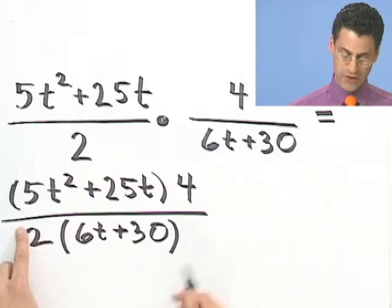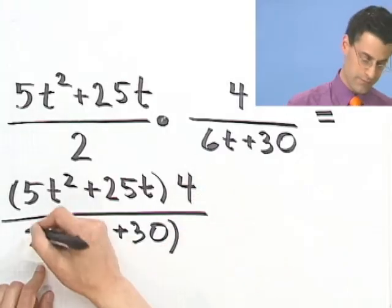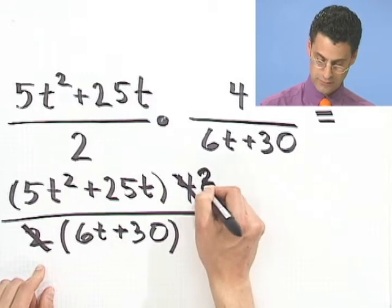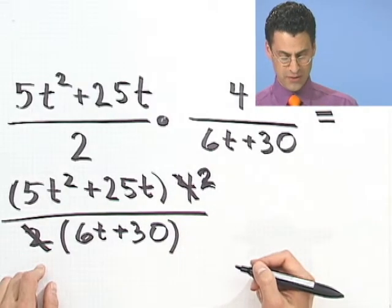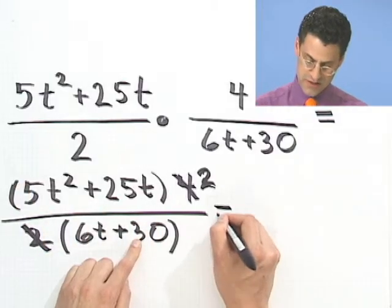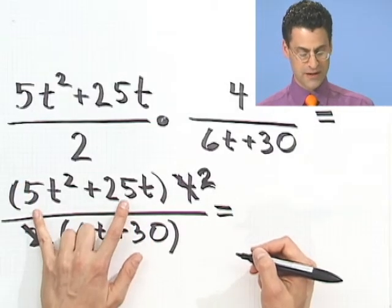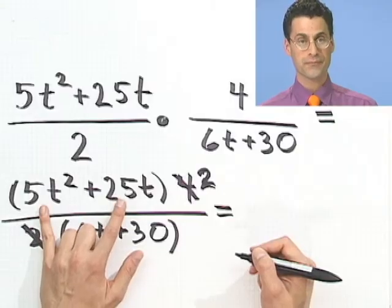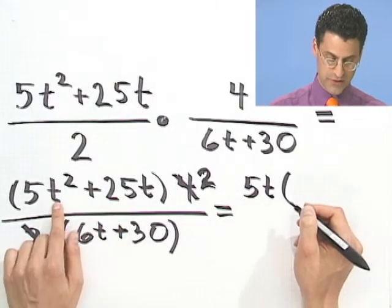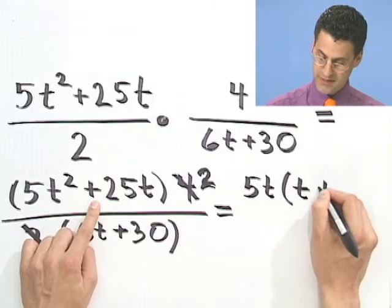OK, well, now I can do some cancellation here. For example, this 2 can cancel with that 4 because they're factors now. I'm left with a 2 here. Anything else can I do? Well, I don't know, but I can factor some common stuff out of here and factor some common stuff out of here. So, let's simplify this. This, it looks like I can factor out a 5t. So, I factor out the common factor of 5t. I'm left with just a t here plus and a 5 here.